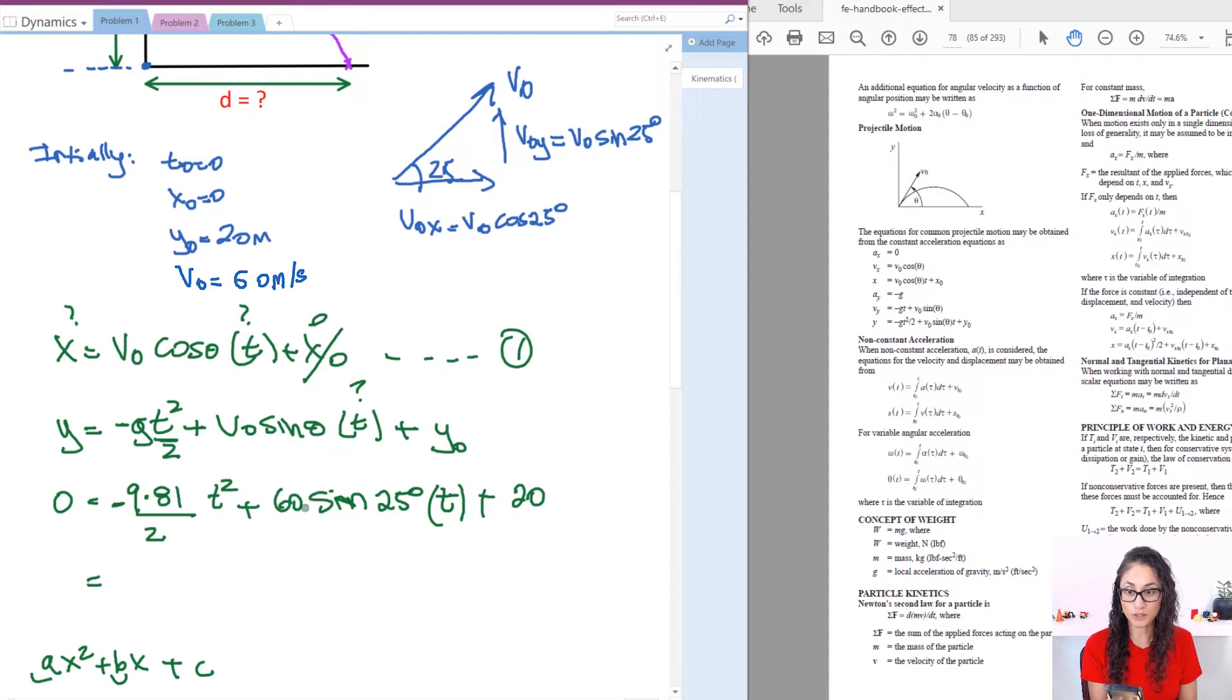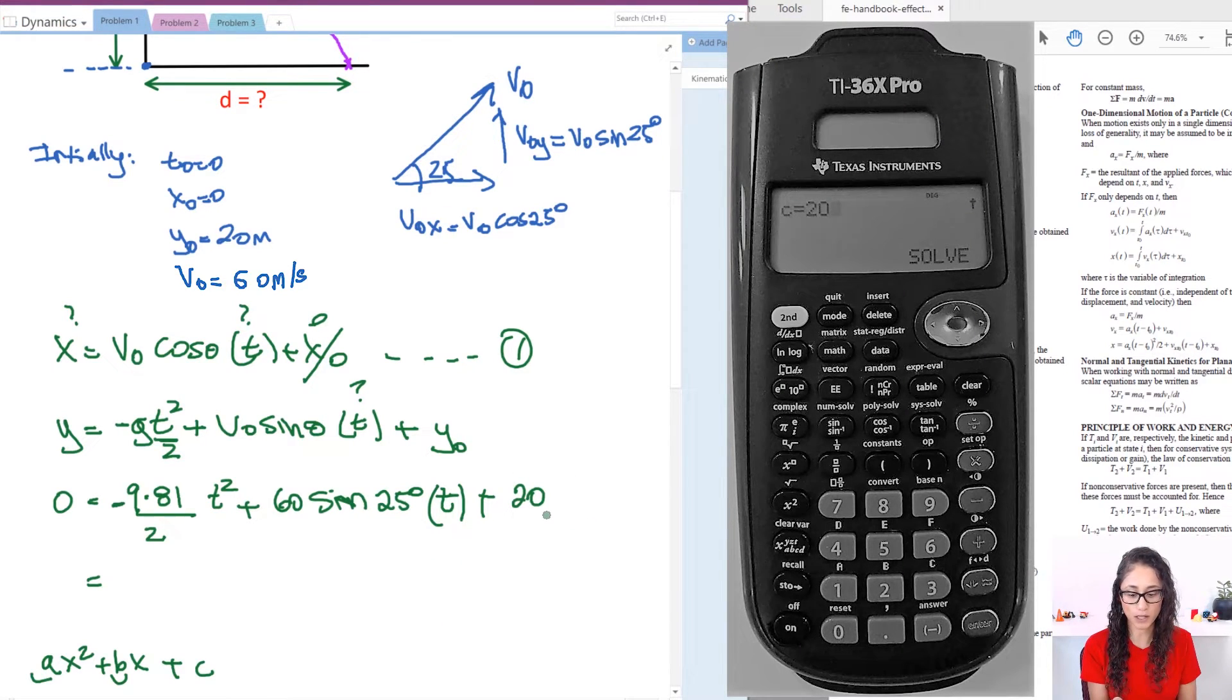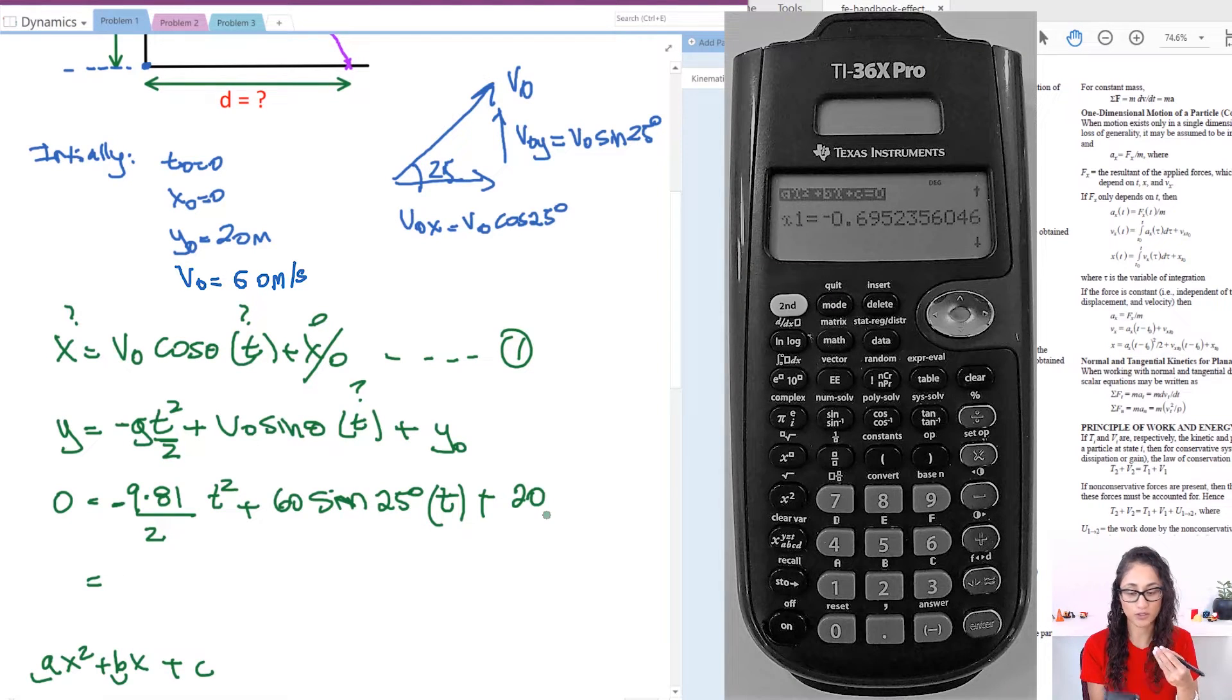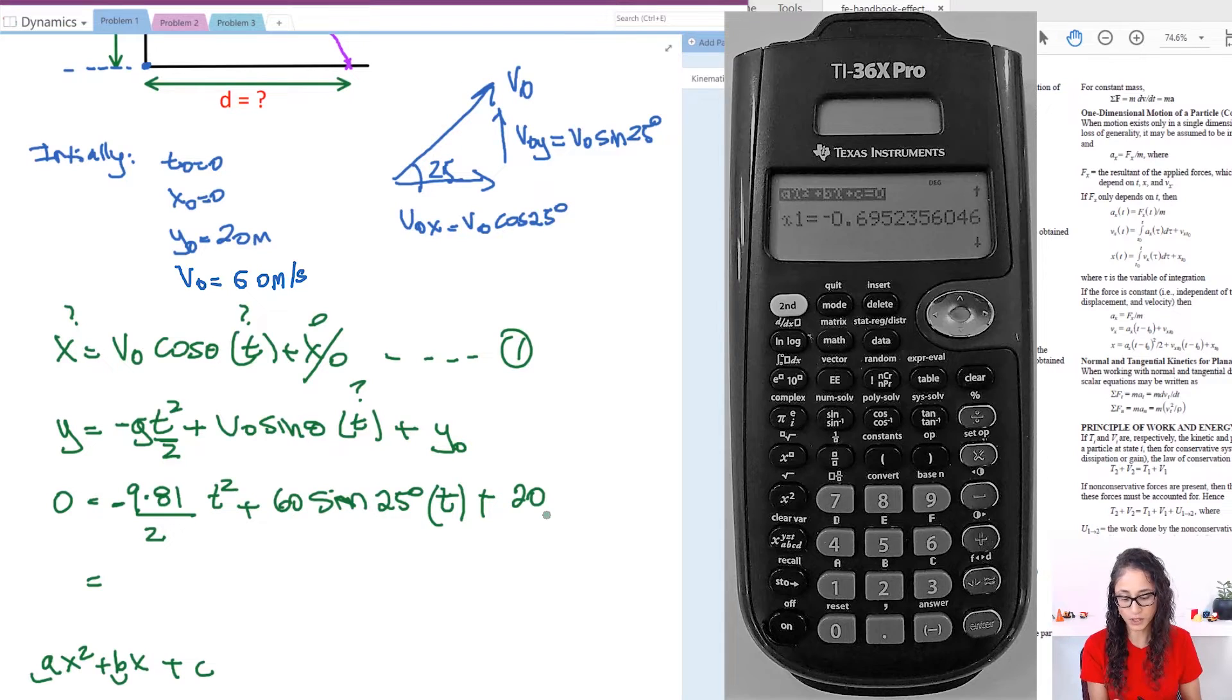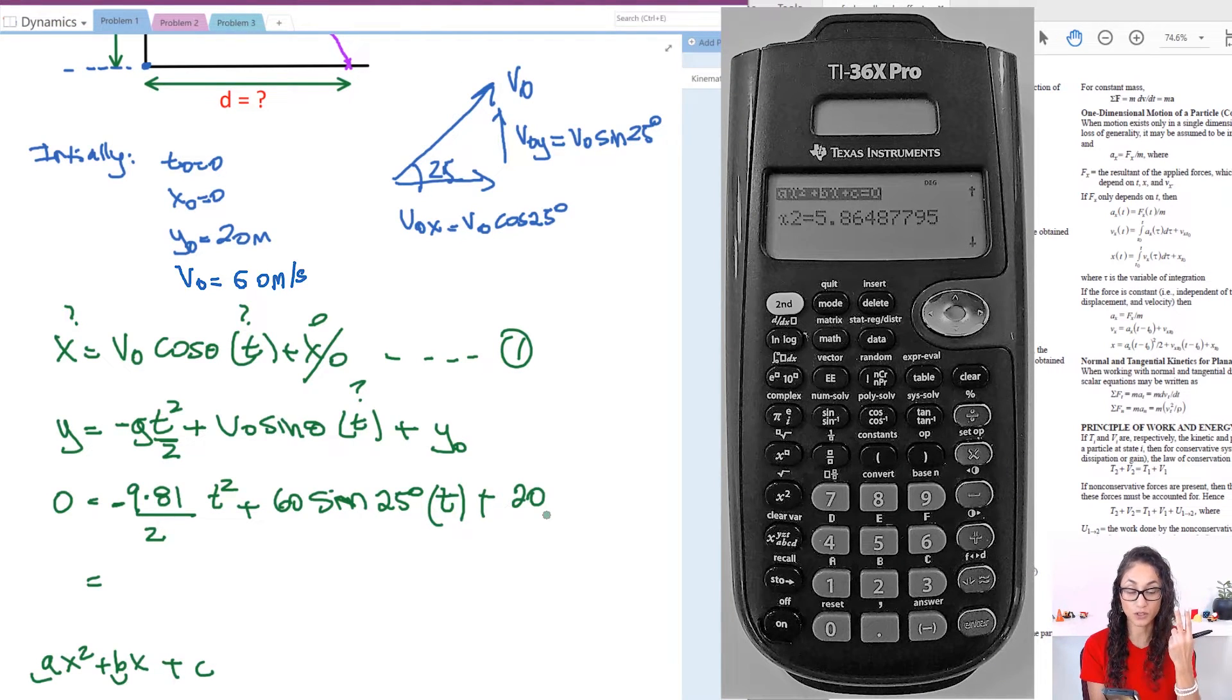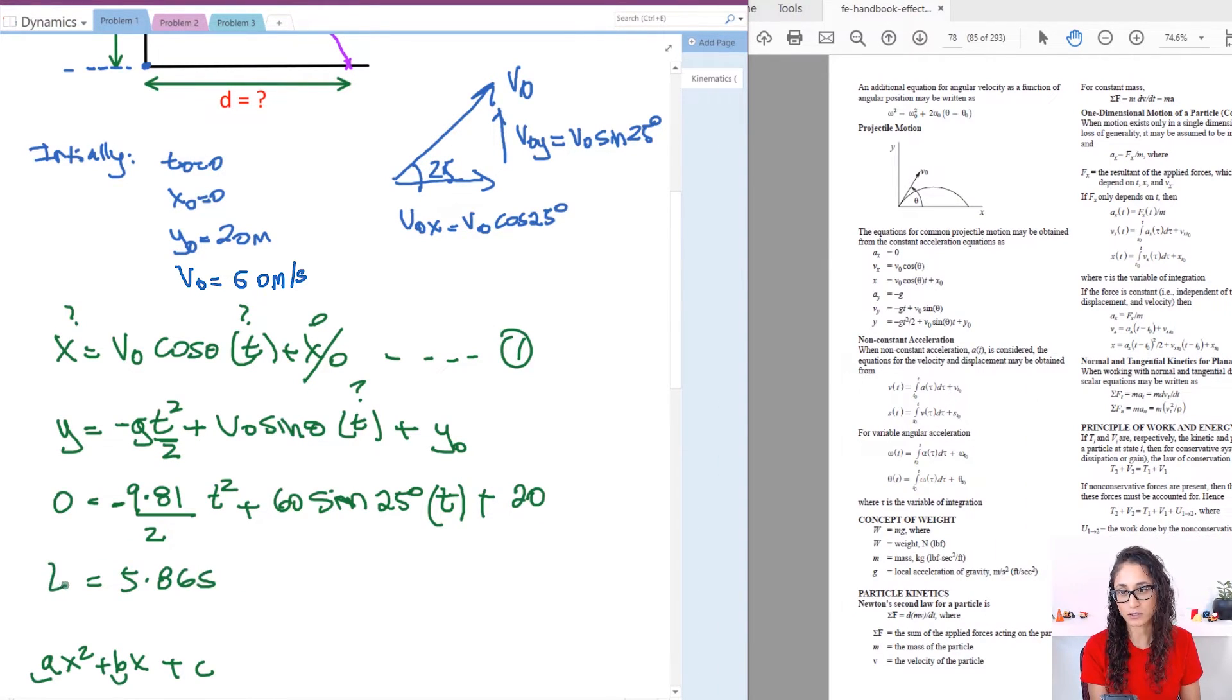Now for b, you're going to do 60 times sine 25. And then press enter. And then you have c, which is 20. And then you're going to press solve. The first one is going to give you a negative, which is impossible. So that one we're not going to use. And then you're going to press another one. And it's going to give you the second solution, which is 5.86 seconds. So that is your t. This is your time.